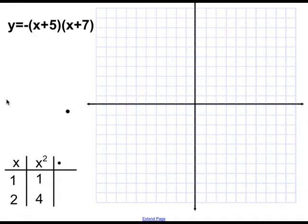Say I ask you to graph negative quantity x plus 5 quantity times x plus 7 quantity. In order to do that, what we first did was we would identify whether it opened up or down based upon the value in front of your parentheses, which is your a value. In this case, since it's negative, we know it's going to open down.